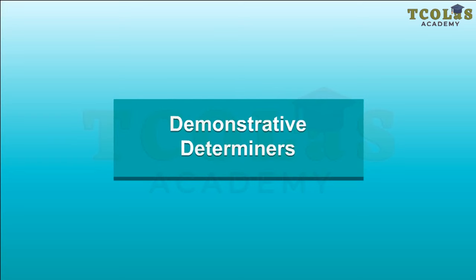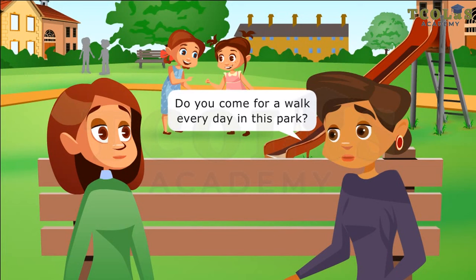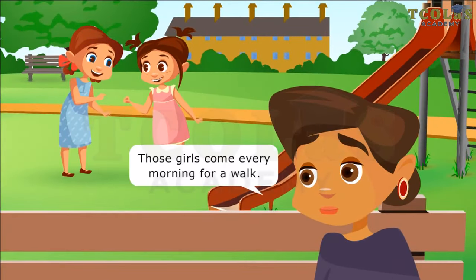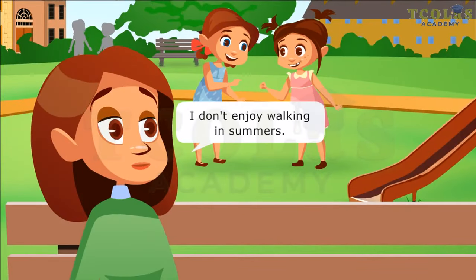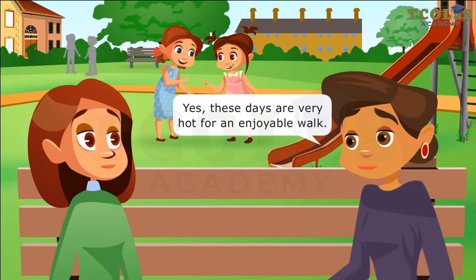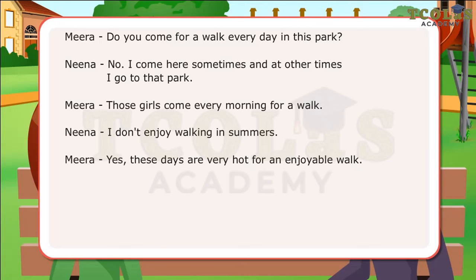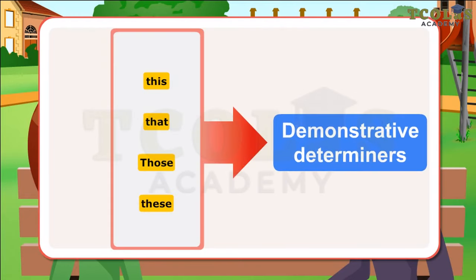Demonstrative Determiners. Do you come for a walk every day in this park? No, I come here sometimes and at other times I go to that park. Those girls come every morning for a walk. I don't enjoy walking in summers. Yes, these days are very hot for an enjoyable walk. In the dialogues, Meera and Neena have used words that give information about the nouns that follow by pointing specifically at them. The words this, that, those, these are examples of demonstrative determiners.